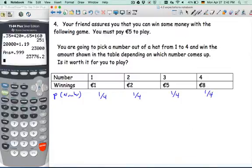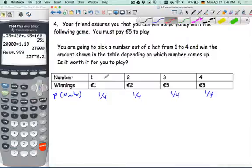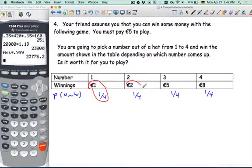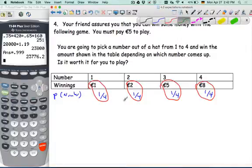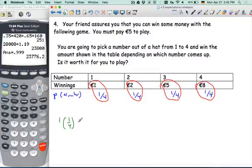So from our initial definition on the first page, what we want to do is find the product of the probability and its expected payout. And we have one quarter of the time where we win one. And the sum. So we're adding one quarter of the time we will win two, one quarter of the time we will win five, and one quarter of the time we will win eight.